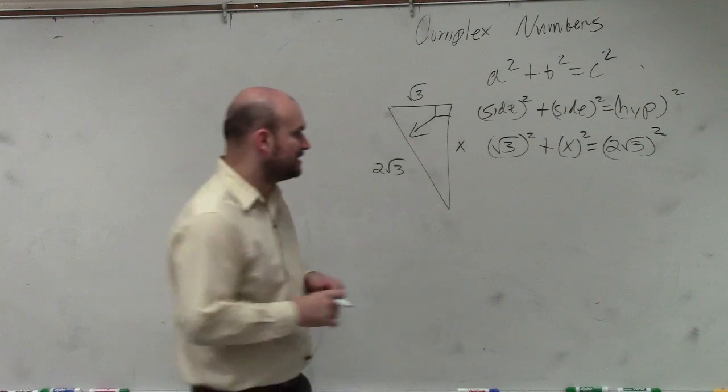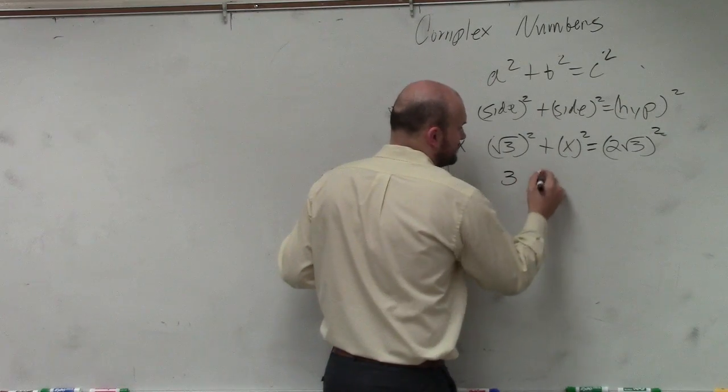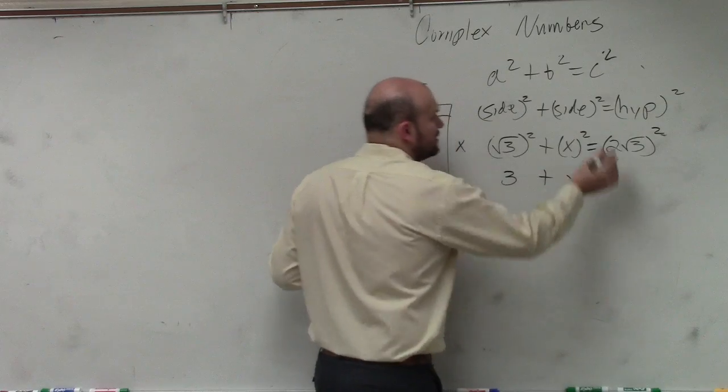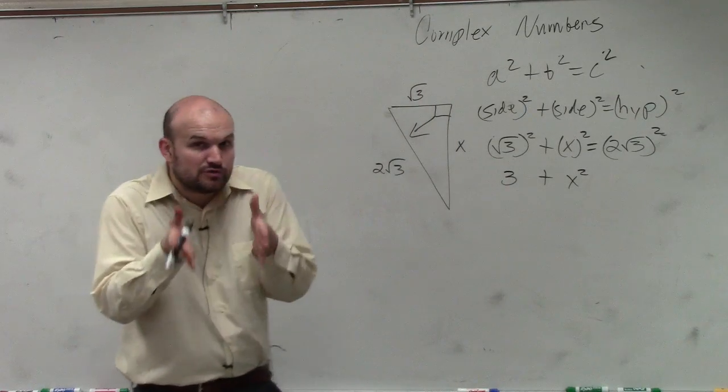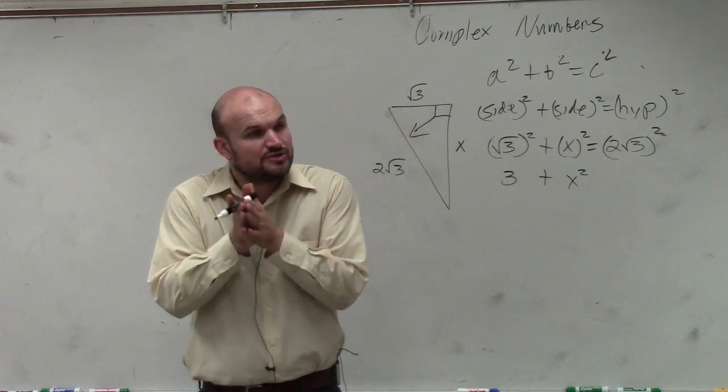OK, so now all we're simply going to do: square root of 3 squared is 3, x squared is x squared, and then 2 square root of 3 is 2 square root of 3 times 2 square root of 3. So you've got to do 2 times 2.